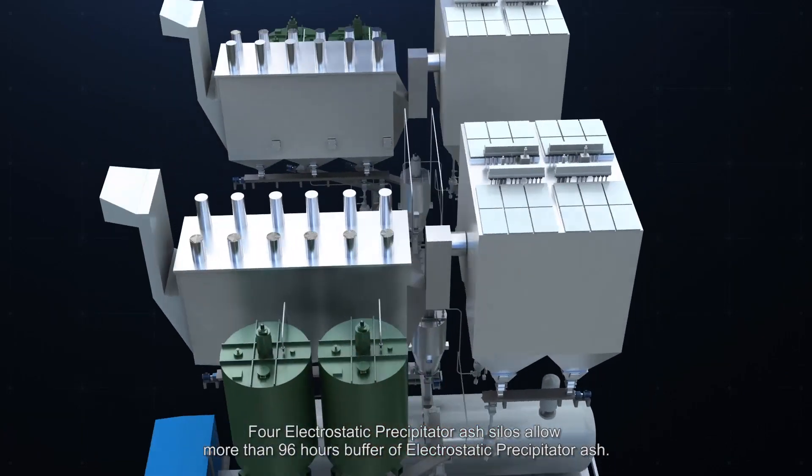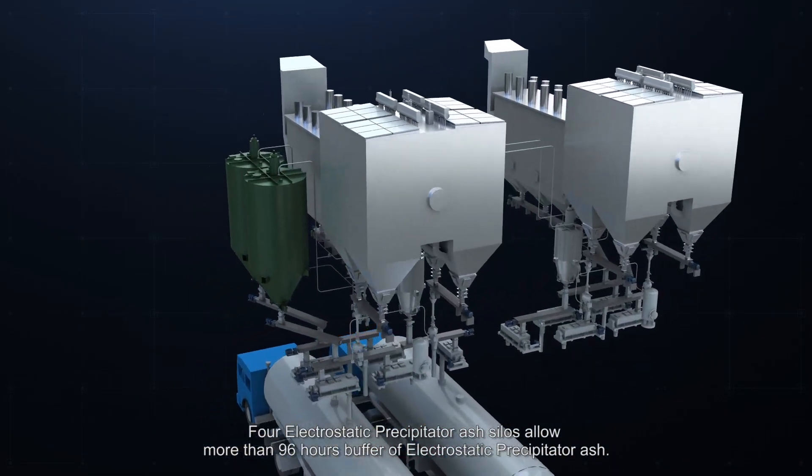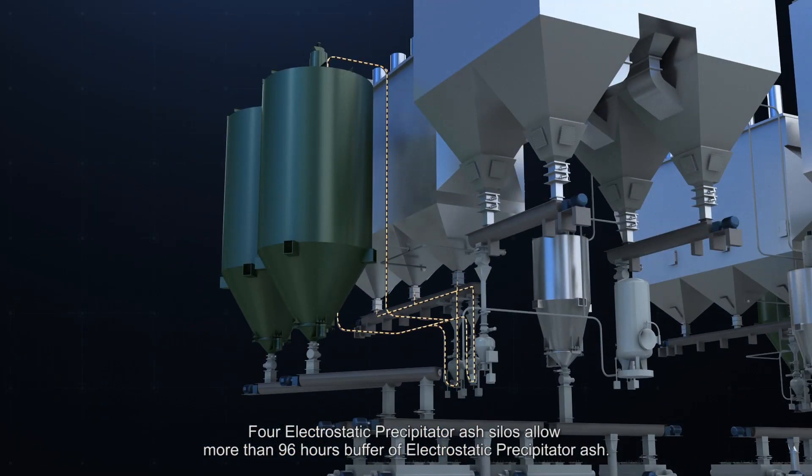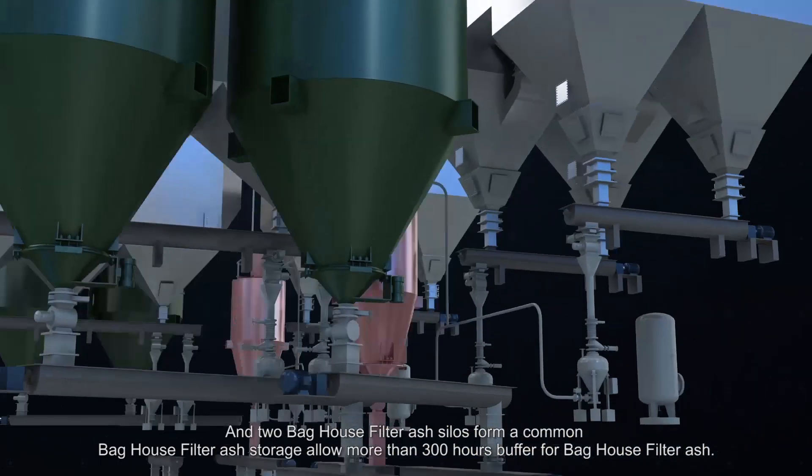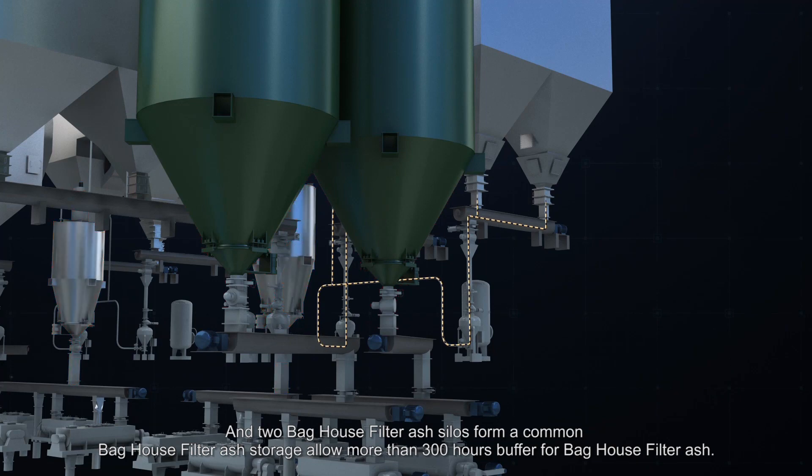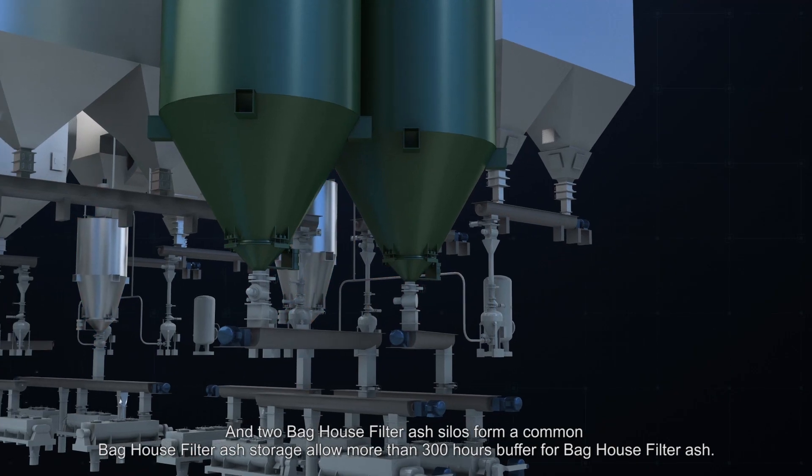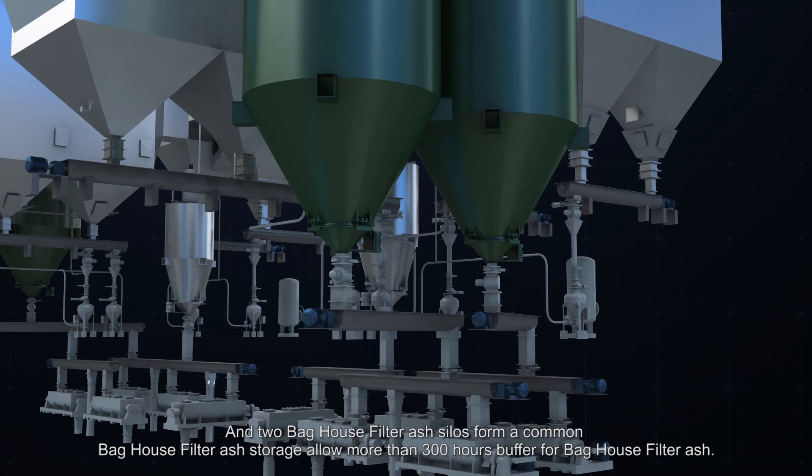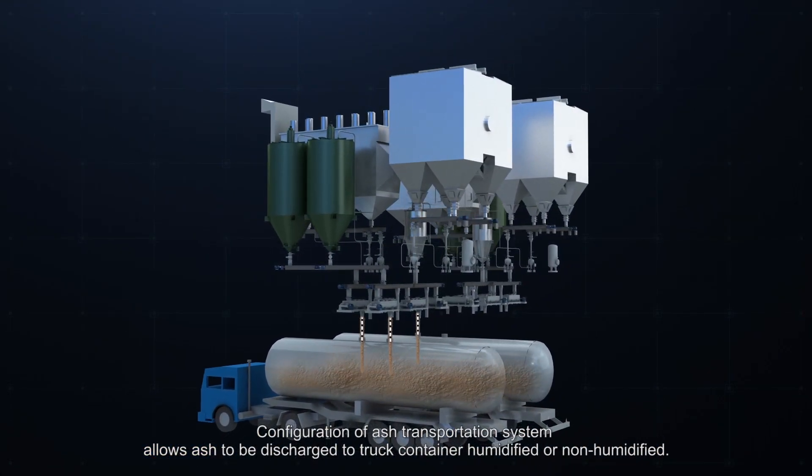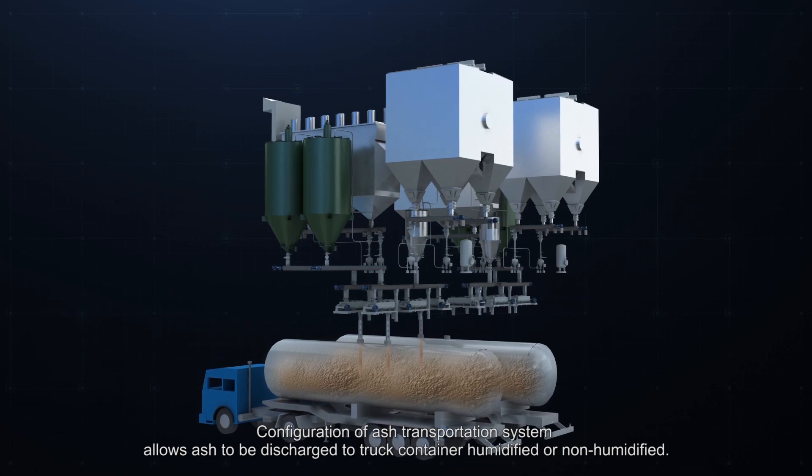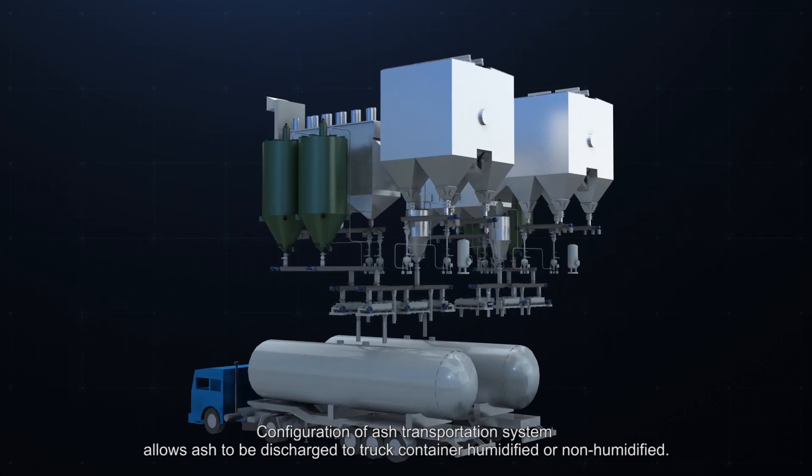Four electrostatic precipitator ash silos allow more than 96 hours buffer of electrostatic precipitator ash. And two bag-house filter ash silos form a common bag-house filter ash storage allow more than 300 hours buffer for bag-house filter ash. Configuration of ash transportation system allows ash to be discharged to truck container humidified or non-humidified.